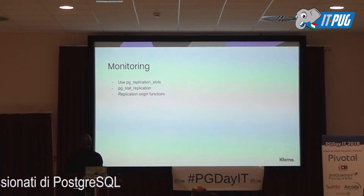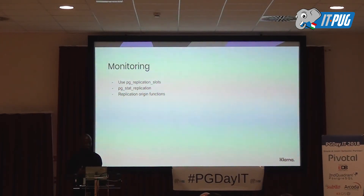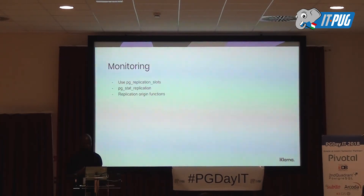A little bit of monitoring. You can query pg_replication_slots to see what slots you have in your database. You can look at pg_stat_replication to see how much you have flushed and how much you have sent. There are also a bunch of functions in replication origin you can use to trace and monitor the progress of your replication.